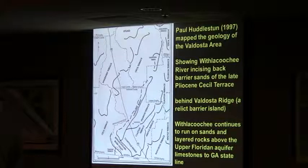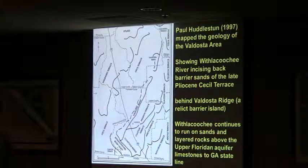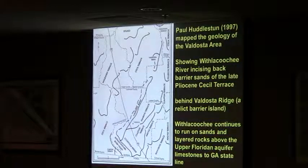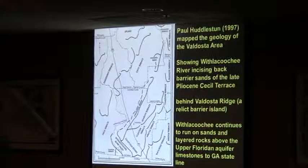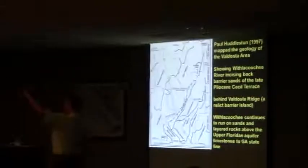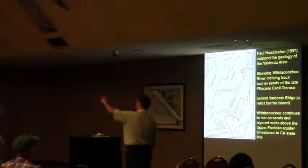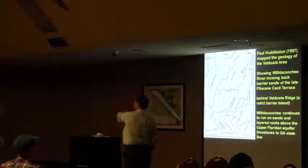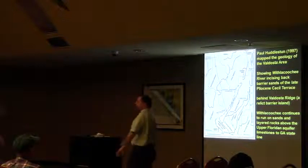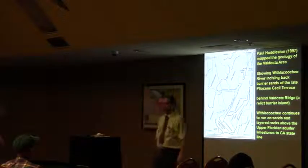So they basically start in this part of Georgia — the ones that can be discerned; there probably are a few more going off to the northwest — but basically from here we have a series of steps that drop down to the present coastline.